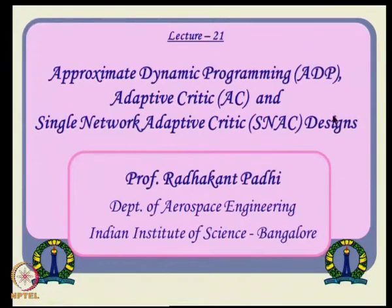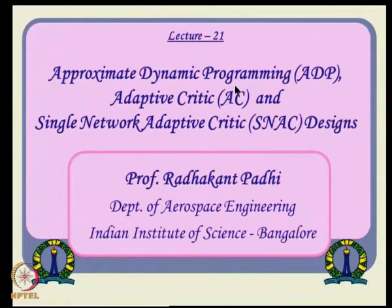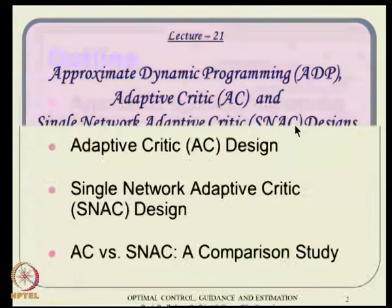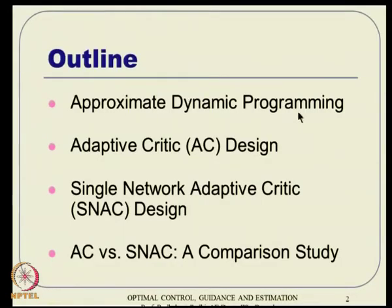In this lecture, we will see one approach called approximate dynamic programming, where you will see a fusion between the ideas of calculus of variations and dynamic programming. Followed by that, we will use those results in a method called adaptive critique and a variation called single network adaptive critique, which is a more computationally efficient approach. The outline is: first, approximate dynamic programming; then adaptive critique design; followed by single network adaptive critique; and finally, performance comparisons between AC and SNAC on two or three example problems.